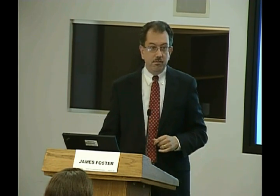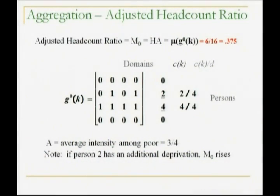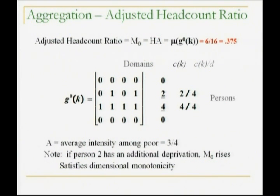By the way, if person two had an additional deprivation, M0 would rise, because A would rise, indicating greater intensity. So that's what we want — it satisfies dimensional monotonicity.